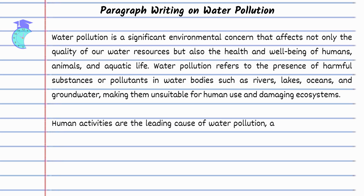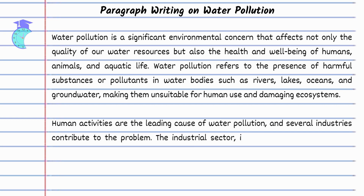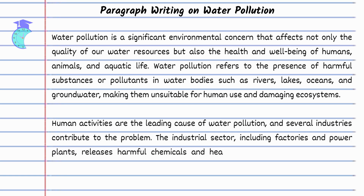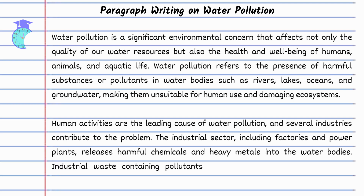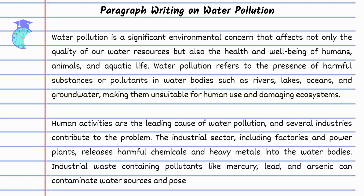Human activities are the leading cause of water pollution, and several industries contribute to the problem. The industrial sector, including factories and power plants, releases harmful chemicals and heavy metals into water bodies. Industrial waste containing pollutants like mercury, lead, and arsenic can contaminate water sources and pose significant risks to human health.